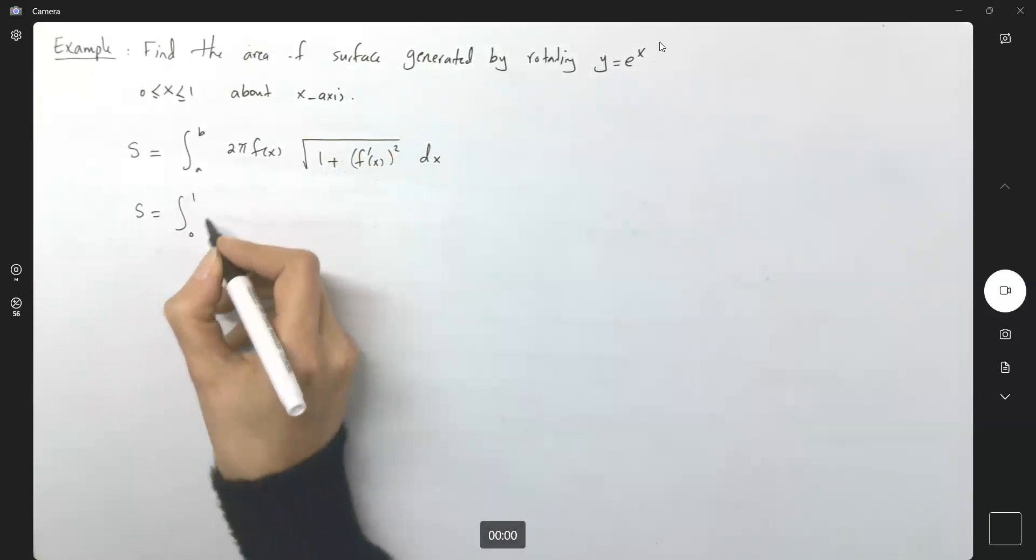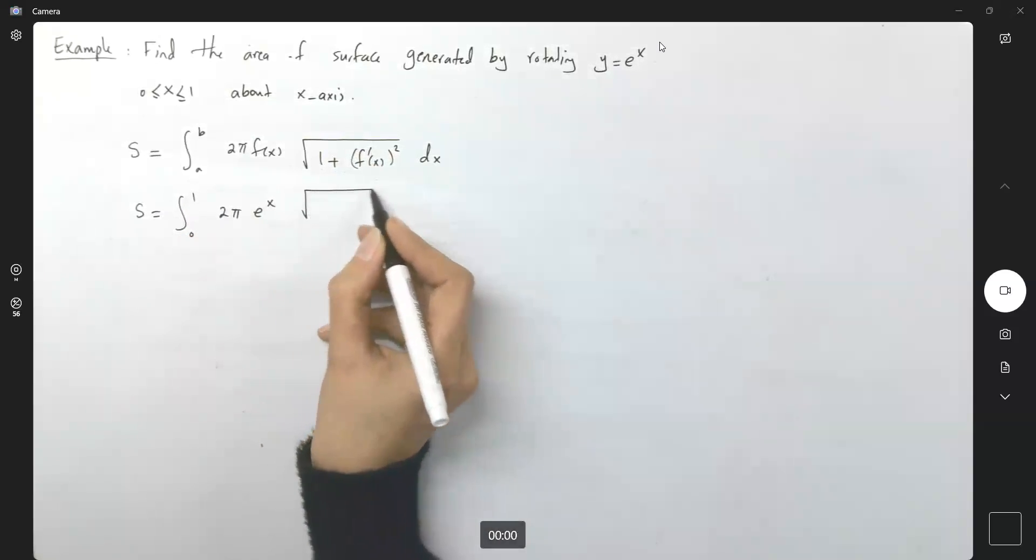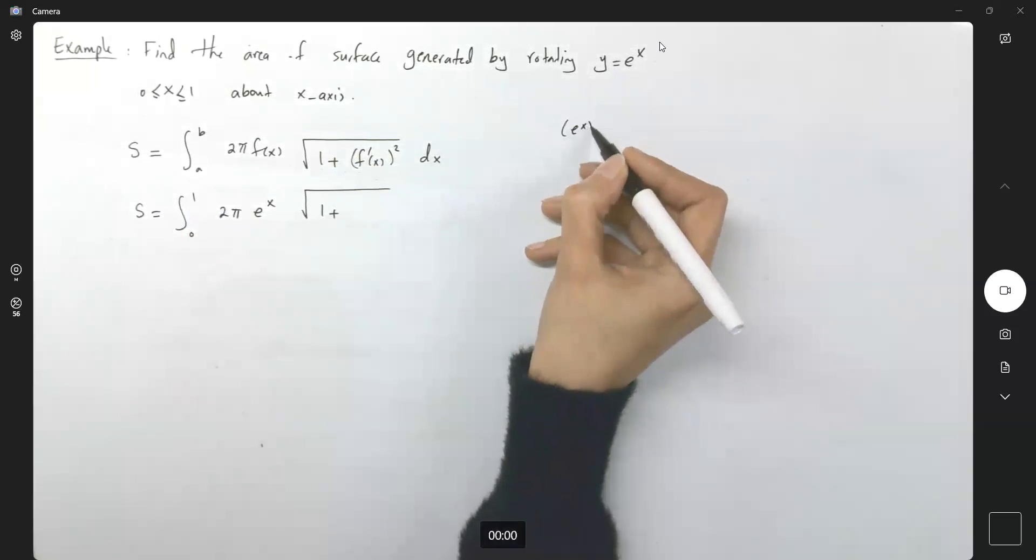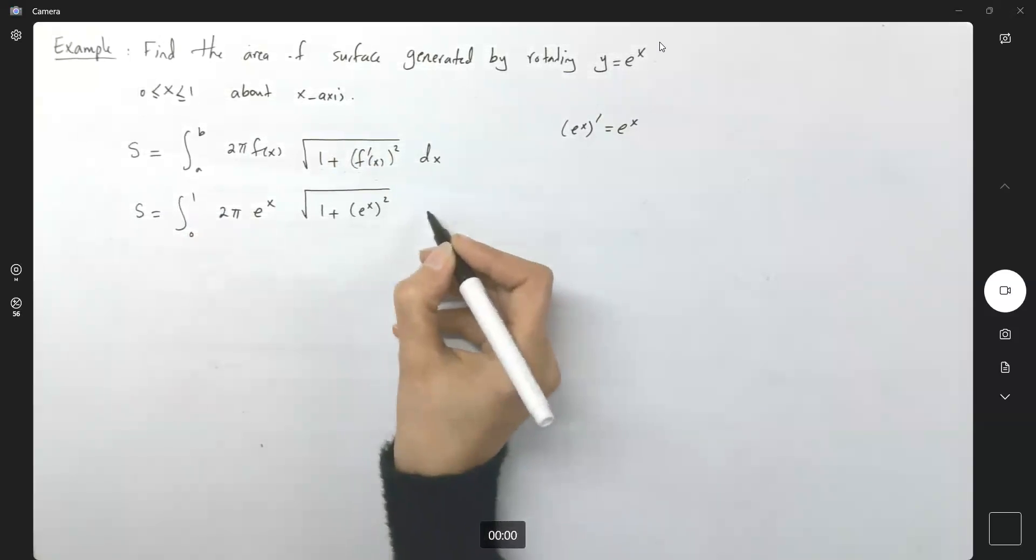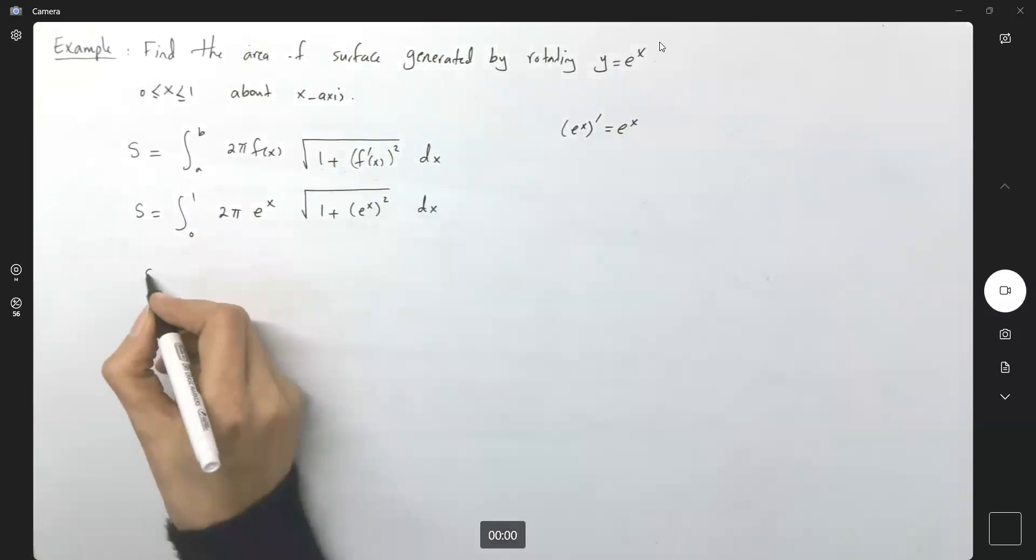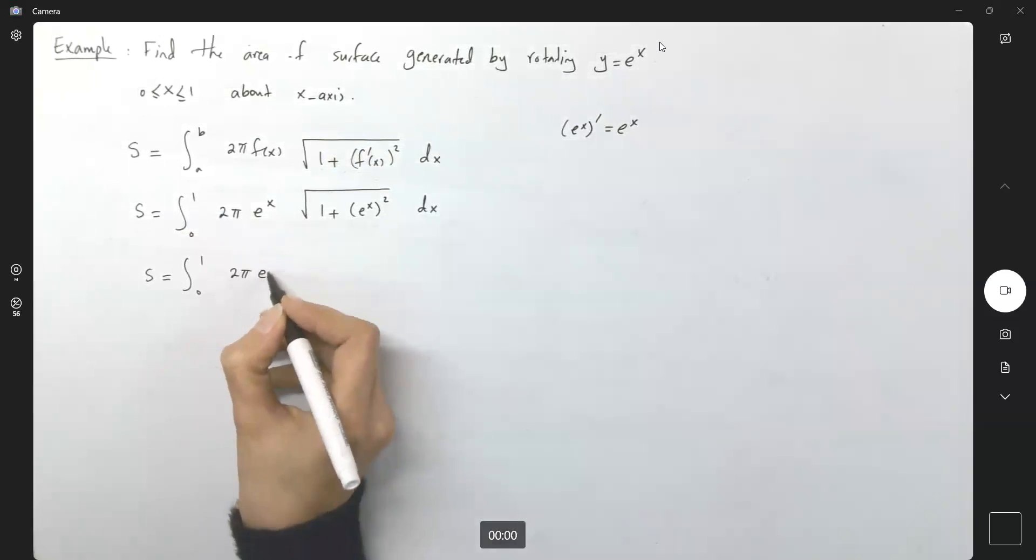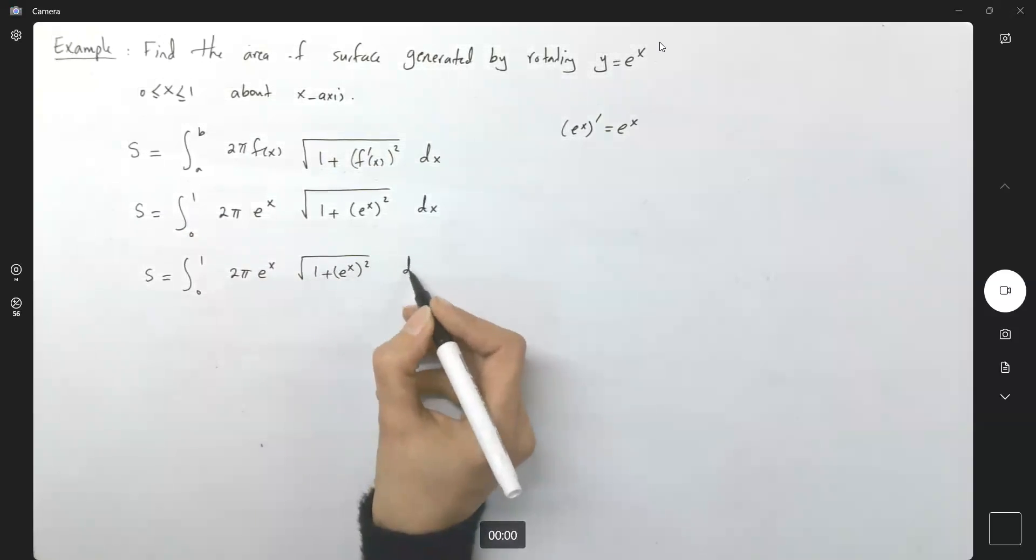So let us follow the formula. S equals the integral from 0 to 1 of 2π e^x times the square root of 1 plus the derivative of e^x, which is e^x, so you're going to have (e^x)^2 dx. Well, S equals the integral from 0 to 1 of 2π e^x √(1 + (e^x)^2) dx.